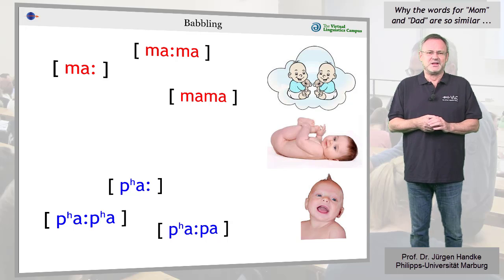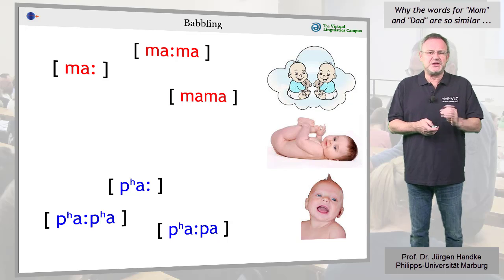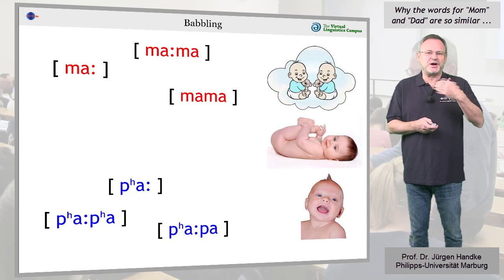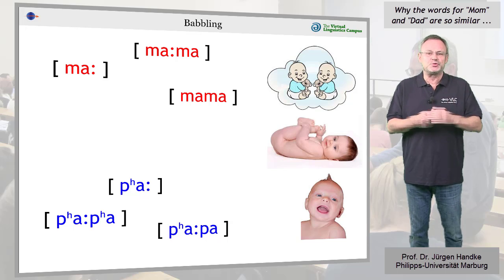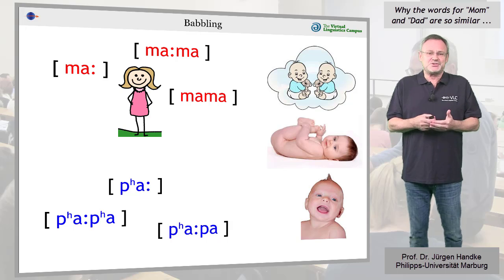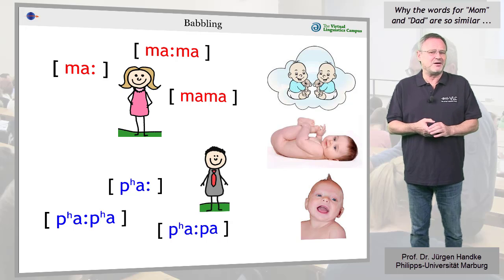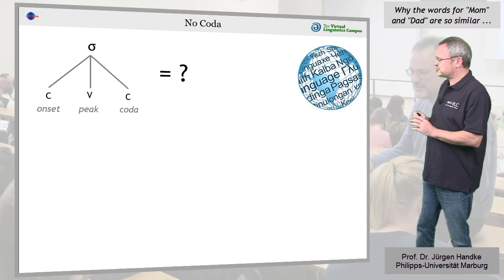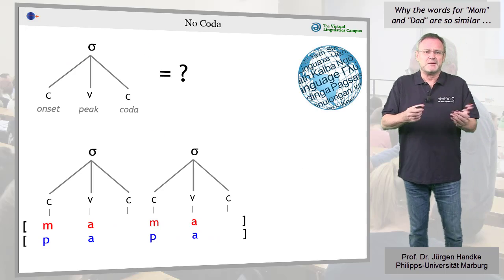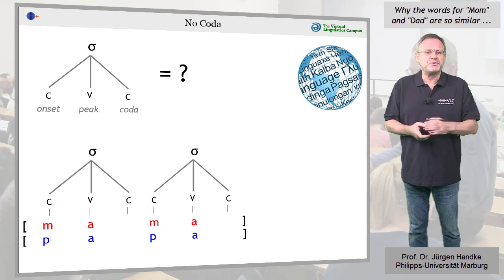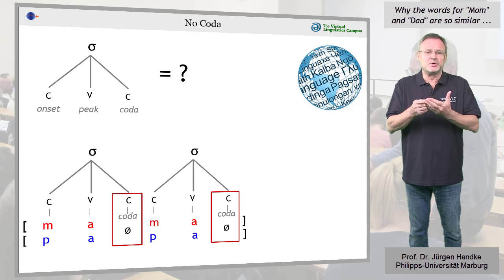Thus, the order in which babies learn to make sounds explains why the next closest usual caretaker to mom is so often called papa or baba. And the syllable structure mama and papa exhibit—open syllables, that is, syllables with no coda. Any explanation for that preference?